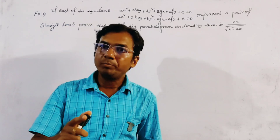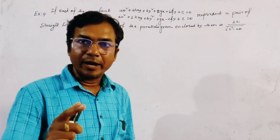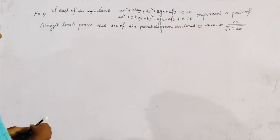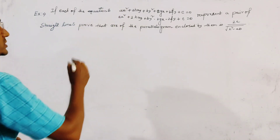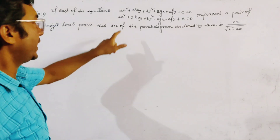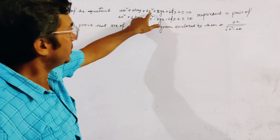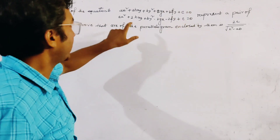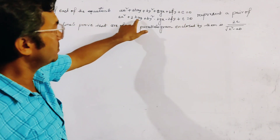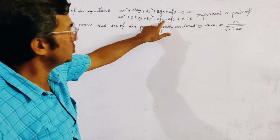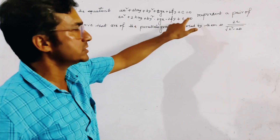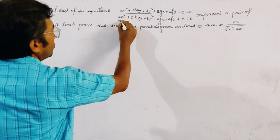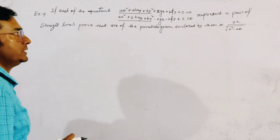Today's problem is from pair of straight lines. Two pair of equations are given: ax² + 2hxy + by² + 2gx + 2fy + c = 0, and ax² + 2hxy + by² - 2gx - 2fy + c = 0. Since the homogeneous part of second degree of both equations is the same, these two pairs represent two pairs of parallel straight lines.